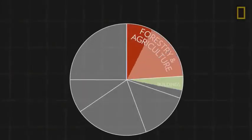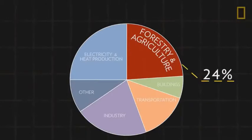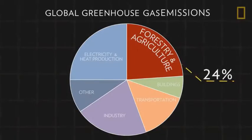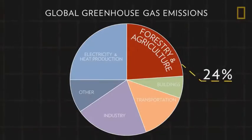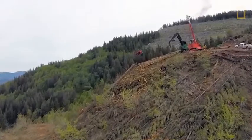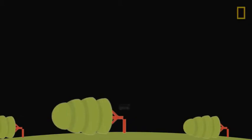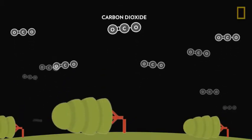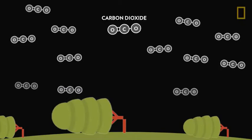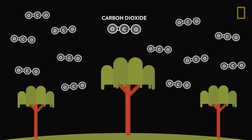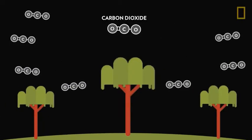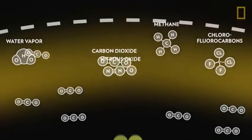Together, forestry and agriculture are responsible for 24 percent of greenhouse gas emissions, making deforestation a significant contributor to climate change. Deforestation impacts the amount of greenhouse gases in the atmosphere in two ways. First, when trees are felled, they release the carbon they are storing into the atmosphere. Second, trees play a critical role in absorbing the greenhouse gases that fuel global warming — fewer forests mean larger amounts of greenhouse gases entering the atmosphere.